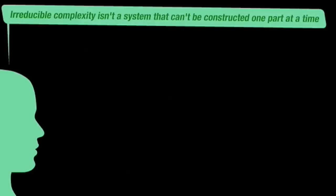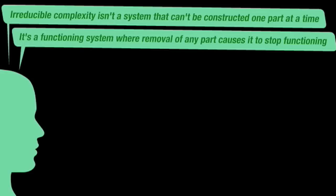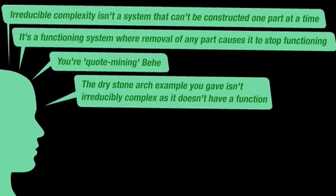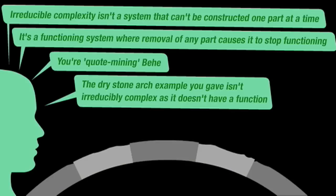This person also complained irreducible complexity is not a system that can't be constructed one part at a time. It's a functioning system where the removal of any one part causes it to stop functioning. He implied I was using the first definition while Behe was using the second, and that I was therefore again somehow quote-mining Behe. He also claimed that the drystone arch example I gave wasn't irreducibly complex because it didn't have a function. Let's untangle this.